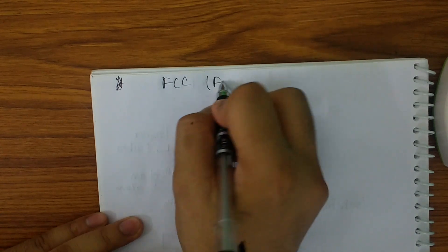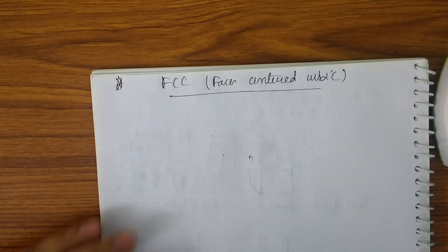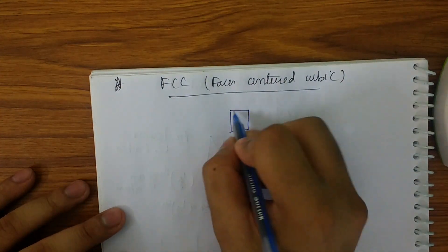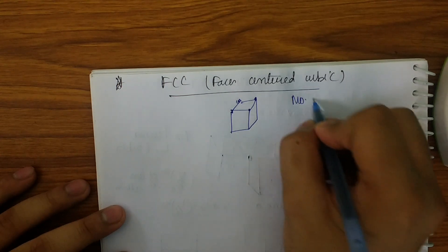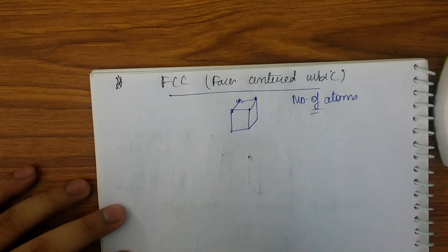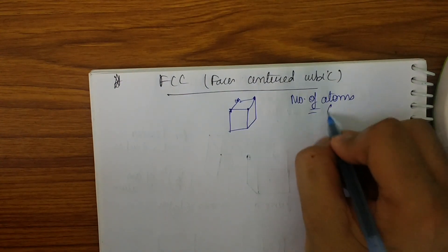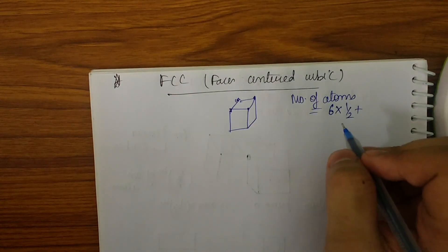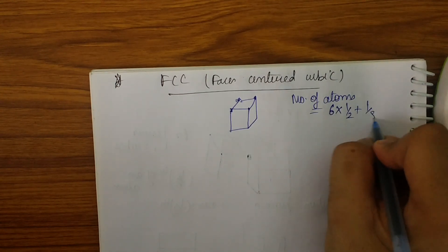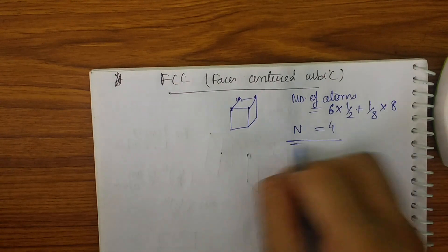Now let me go to the FCC, which is face centered cubic cell. The atom will be present at the face center and the corners. For the face center: how many faces do I have? 1, 2, 3, 4, 5, and 6 — so six faces. Six × (1/2 contribution per face) = 3. For the corners: (1/8) × 8 = 1. So the number of atoms = 3 + 1 = 4. The number of atoms in FCC is four.